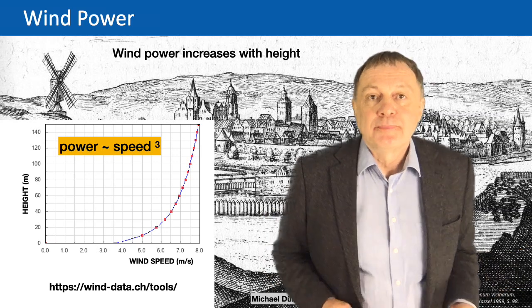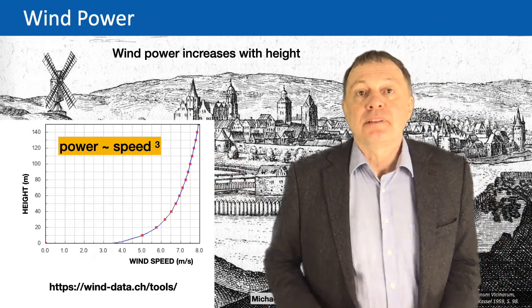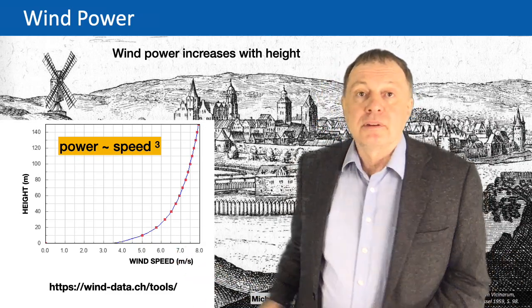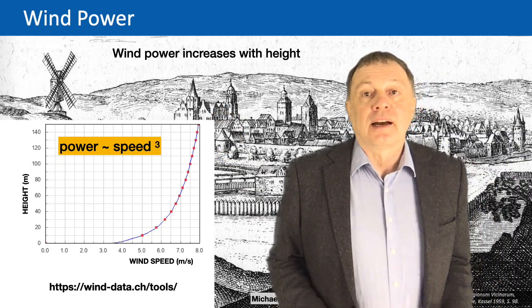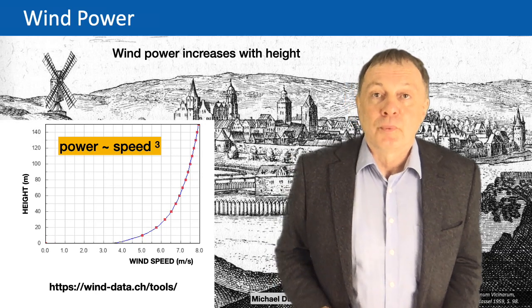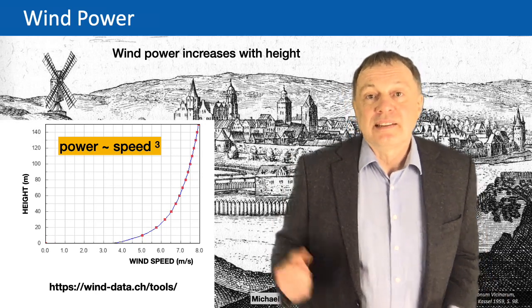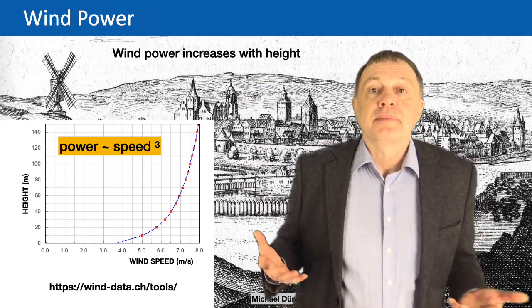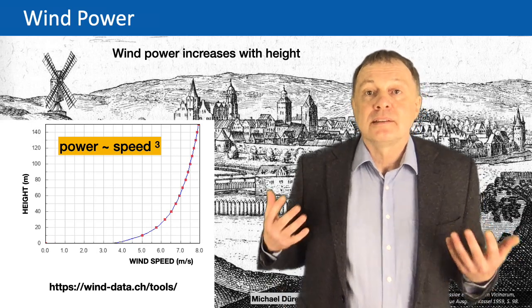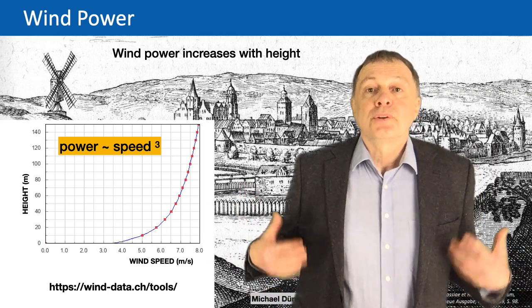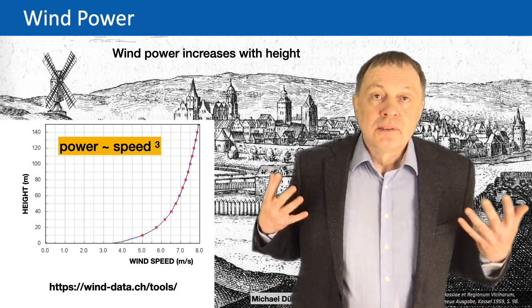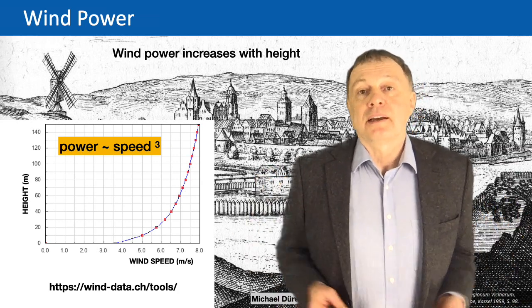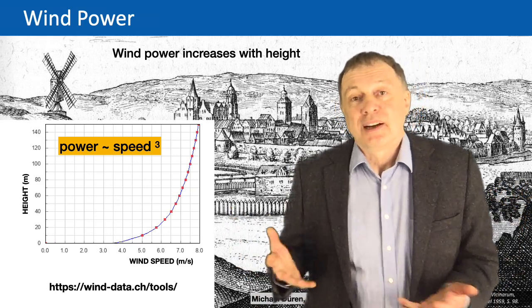So how does wind depend on height? There is a diagram here showing a measurement: if you go higher and higher, the wind speed plotted on the horizontal axis increases — from about 3 meters per second to about 8 meters per second. There is a significant increase of wind speed with height. The important thing is that wind power goes with the third power of speed. So for example if the wind speed is twice as high on top of a mountain, the wind power is not twice as high but 2 to the third — that is 8 times stronger than in the valley. Why wind power is proportional to the speed to the third power is something I will explain in the next lecture.